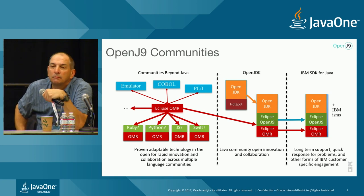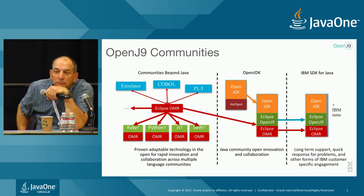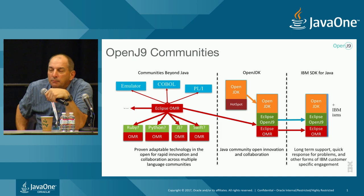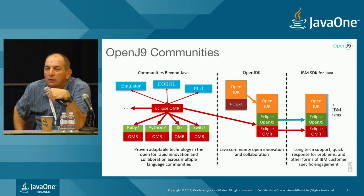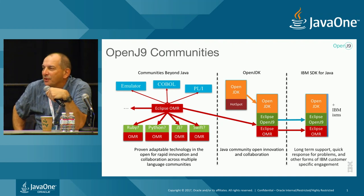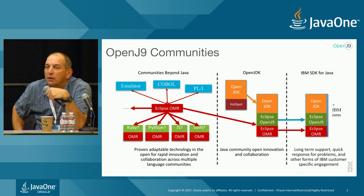Do you still have RTSJ memory areas supporting them? The question is about support for the RTSJ memory areas. That is not in our code base for OpenJ9 — we didn't put that out there. We stopped supporting RTSJ in Java 7. The last release was Java 7.